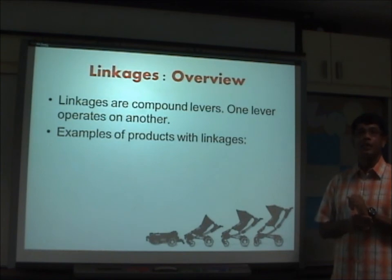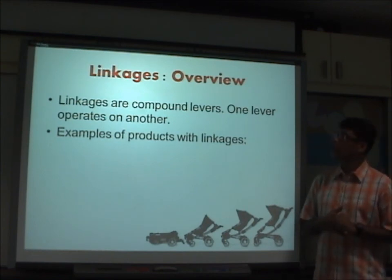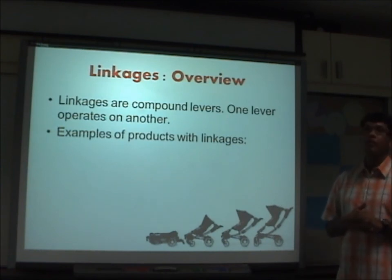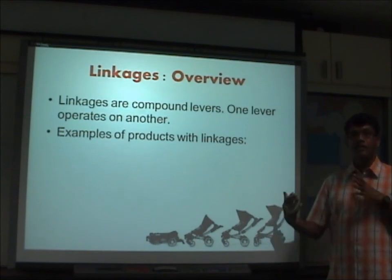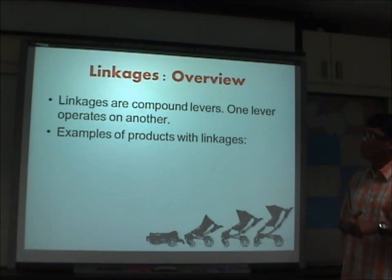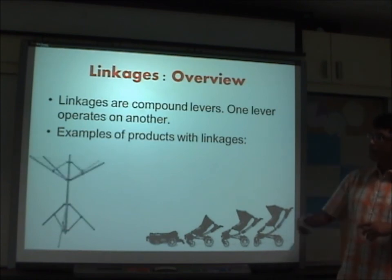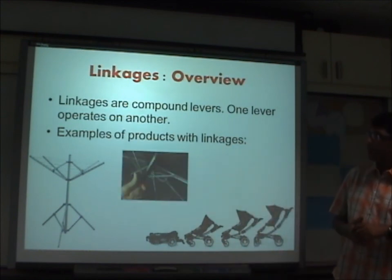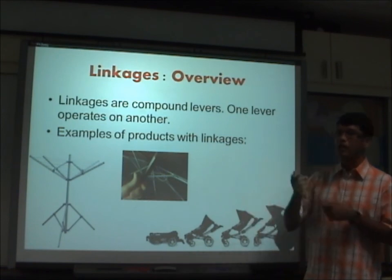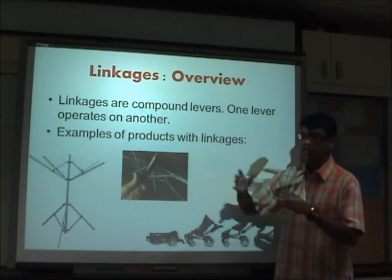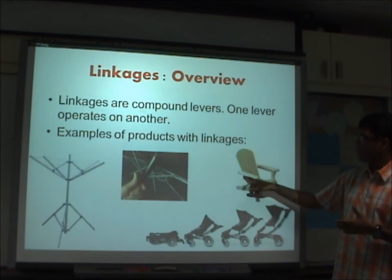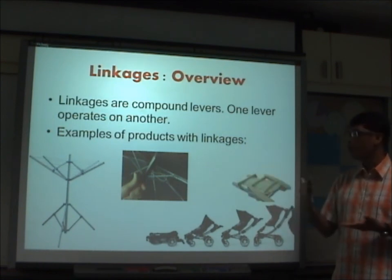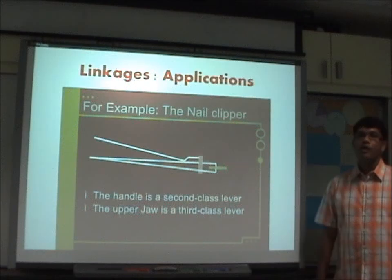We are now moving on to linkages — another type of mechanism you'll be learning today. Linkages are compound levers — an extension of what we just learned about levers — where one lever operates on another. Examples of products with linkages include adjustable stands, umbrellas where pulling a mechanism expands the canopy to give shade, and collapsible chairs that have linkages enabling folding and unfolding.